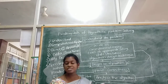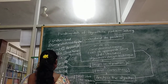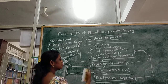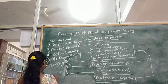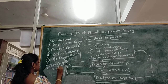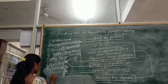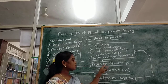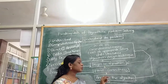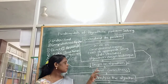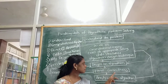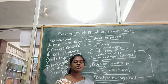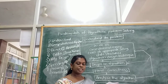Next is proving correctness. After designing an algorithm, you have to prove its correctness — you have to check whether the algorithm is working correctly or not. To prove the correctness of an algorithm, you use mathematical induction.